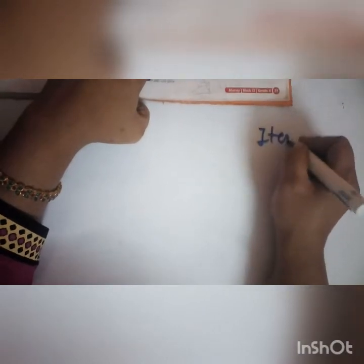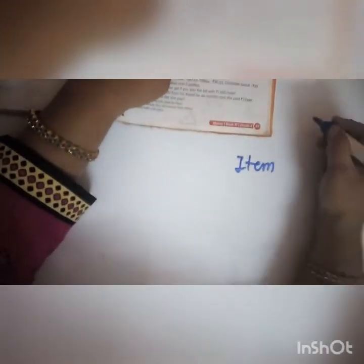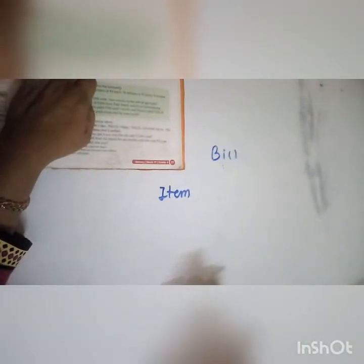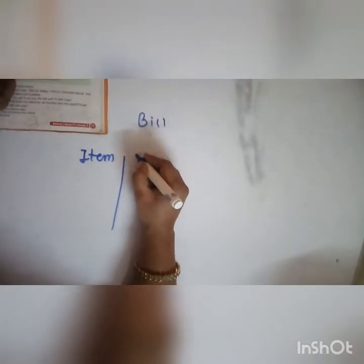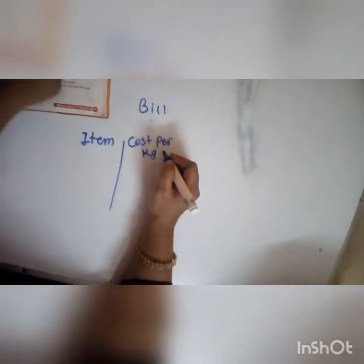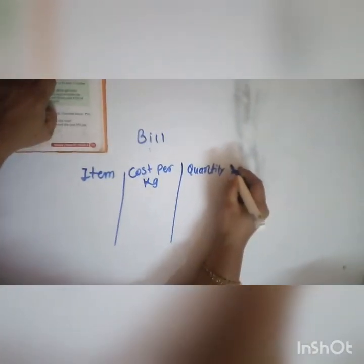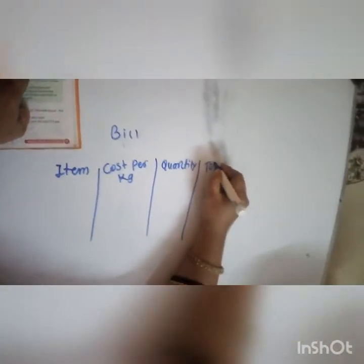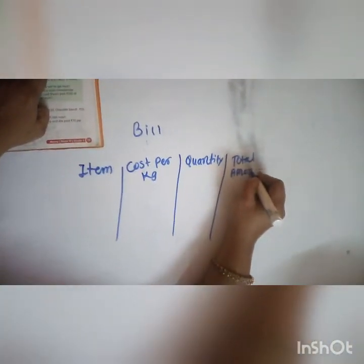Then we have word problems on the next page. Prepare a bill for the following. How to prepare a bill: we will write the items first, then we write the cost per kg, then the quantity, and then the total amount. So like this we have to prepare the bill.